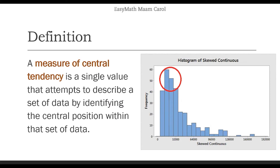Let's start with the definition. A measure of central tendency is a single value that attempts to describe a set of data by identifying the central position within that set of data. Ang tinatawag natin na measure of central tendency ay yung pinakagitna ng data set natin. This is a visual representation of a data set — naka-histogram na siya, similar to a bar graph. At pag hinahanap natin yung central tendency, hinahanap natin yung pinakagitna.